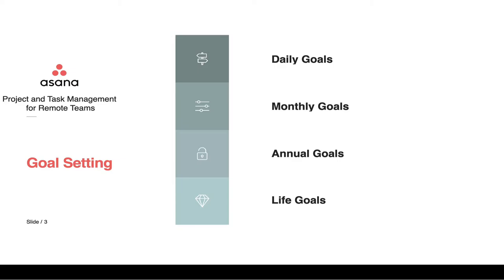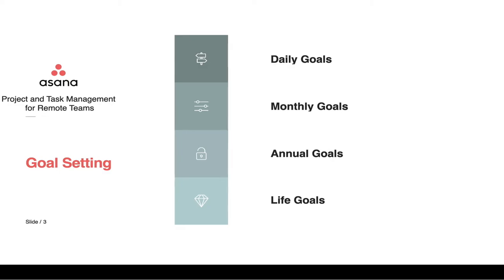We're going to talk about breaking down a simple way in Asana, just based off time, to track all of these goals very easily and all in one place — a repeatable process. The great benefit of longer-term projects is that once you set them up, they're there for you, available and repeatable. You can duplicate the projects and tasks. You could have a project for 10 years, 10 years of goals in here.